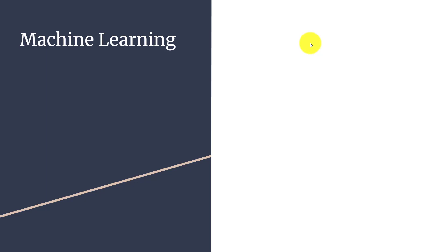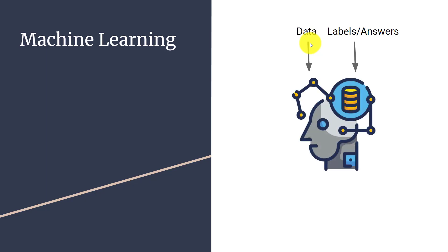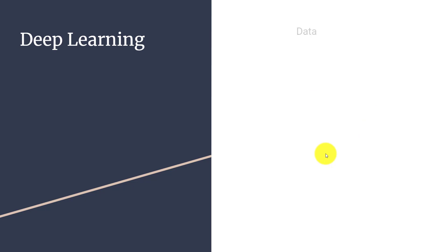In machine learning, we still have our data but we also provide labeled data — the answers — which we call training data. We pass it to the machine learning process, which creates a model and generates rules. The key difference is that machine learning creates the rules, in comparison to traditional programming where the developer writes the rules manually.